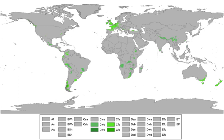It is the predominant climate type across much of Western Europe including the United Kingdom, the Pacific Northwest region of the United States and Canada, portions of Central Mexico, Southwestern South America, Southeastern Australia including Tasmania, New Zealand, as well as isolated locations elsewhere.